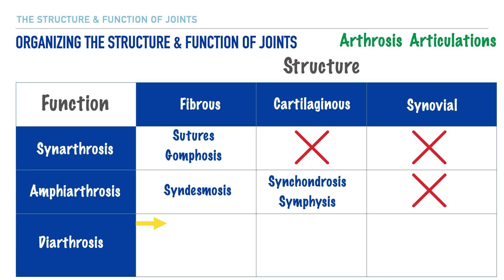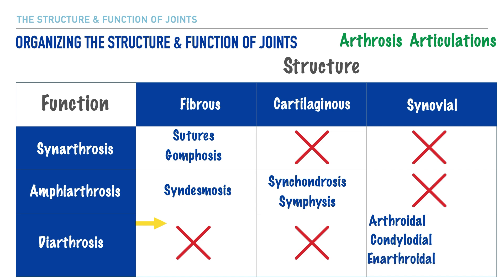In our last row, we place an X in the first two boxes, signifying that we don't have any fibrous or cartilaginous joints that are freely movable. However, we do have several synovial joints that are freely movable: arthroidal, condyloidal, enarthroidal, ganglimus, cellar, and trochoidal.